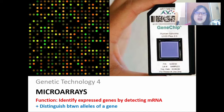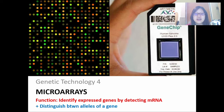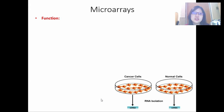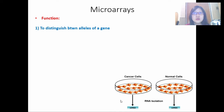Hi everyone, and welcome to Chapter 19. This is Genetic Technology 4 on microarrays. Its function is twofold: number one is to identify expressed genes by detecting mRNA, and number two is to distinguish between alleles of a gene. Functions are very important so you know where and when to use a certain technique and for what.